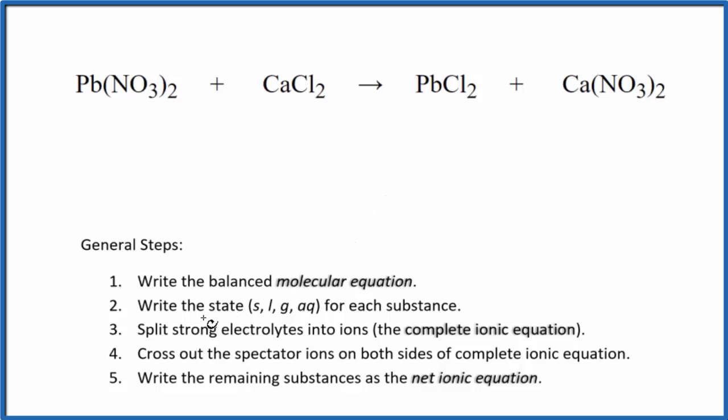Next, we write the state for each substance. If you know your solubility rules, nitrates are very soluble. So this is going to be Aq. Aqueous, it'll dissolve and dissociate into its ions. Chlorides, also very soluble, Aq.